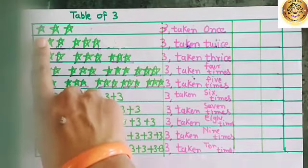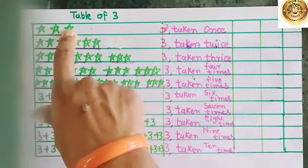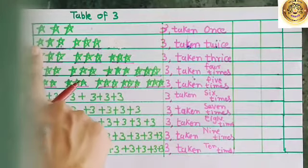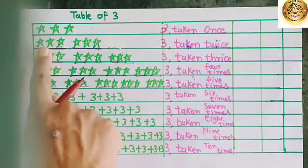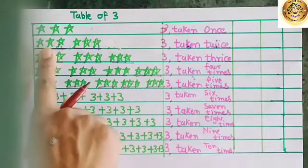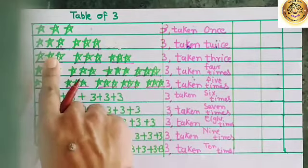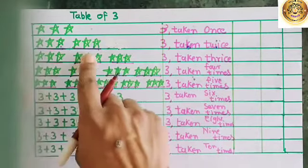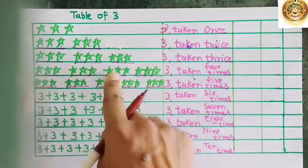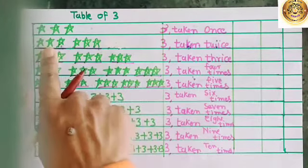Here you can see, children, we have 1, 2, 3 stars in the first box. In the second box, we have 3 stars — 2 groups of 3 stars. And in the third box, we have 3 groups of 3 stars. Like that, we have 1, 2, 3, 4 groups of 3 stars. In each group, we have 3 stars.